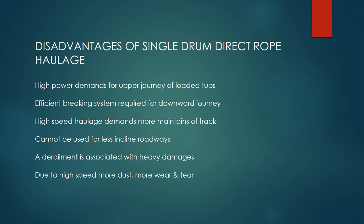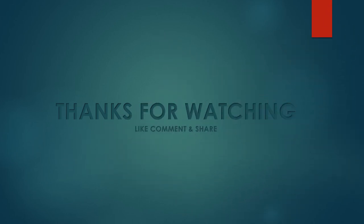Disadvantages of Single Drum Direct Rope Haulage: High power demand for the upward journey of loaded tubs. An efficient braking system is required for the downward journey. High-speed haulage demands more maintenance of track. Cannot be used for less inclined roadways. A derailment is associated with heavy damages. Due to high speed, there is more dust and more wear and tear.